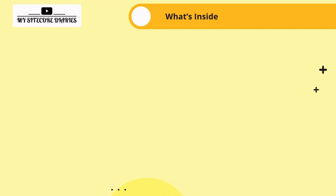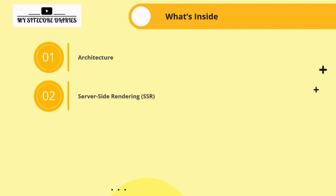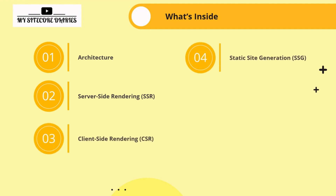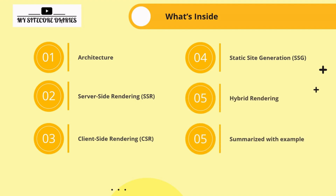So what we are going to see in today's video: we are going to see Sitecore JSS architecture, then we will see what are server side renderings, what are client side renderings, what is static site generation and hybrid rendering. At the end, we will summarize and differentiate between SSR, CSR and SSG.